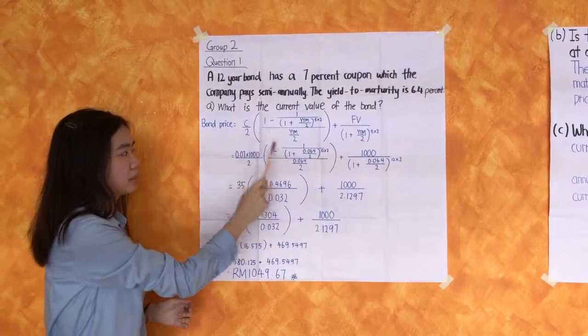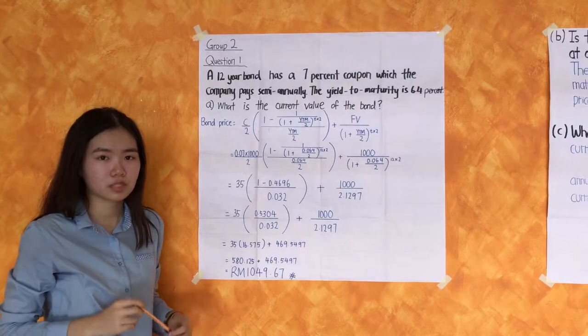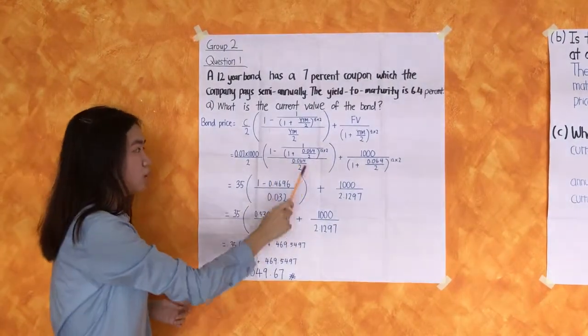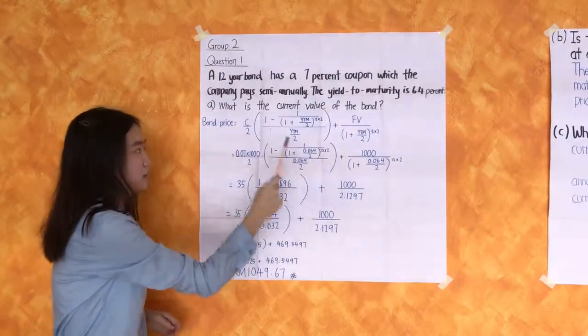...times 1 minus 1 divided by 1 plus YTM 0.064 divided by 2, power by 12 years times 2, divided by the YTM 0.064 divided by 2.